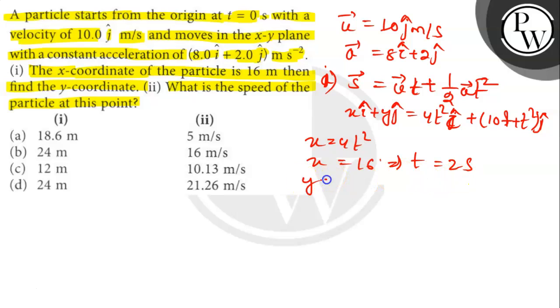So, y is 10 t plus t squared. At t equals 2, y is 24 meters.